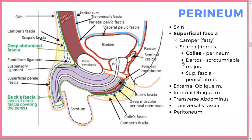These layers are continuous with Colles' fascia and the superficial fascia with the genitals. Then you've got the external oblique, internal oblique, transversus abdominis, transversalis fascia, and peritoneum. Understanding which goes where is important — this diagram is quite good, so if you can memorize it with mnemonics that's really helpful.